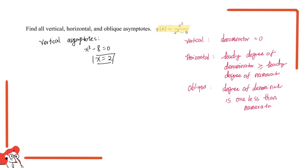For horizontal asymptotes, we need the leading degree of the denominator to be greater than or equal to the degree of the numerator. But three is smaller than five, so there are no horizontal asymptotes. Then we check for oblique — the degree of the denominator needs to be one less than the numerator, but three is two less than five, so there are no oblique asymptotes either.